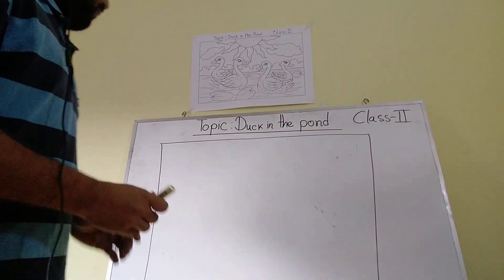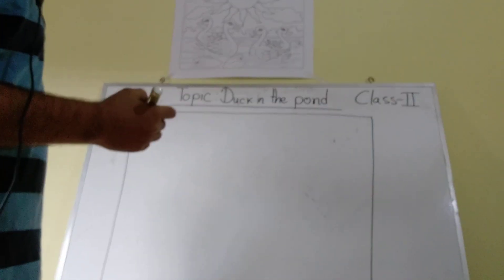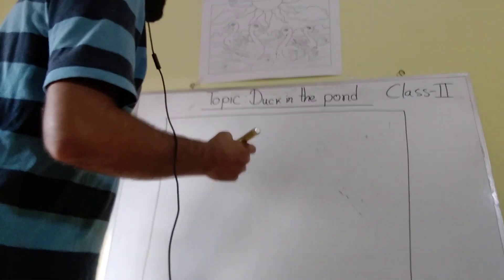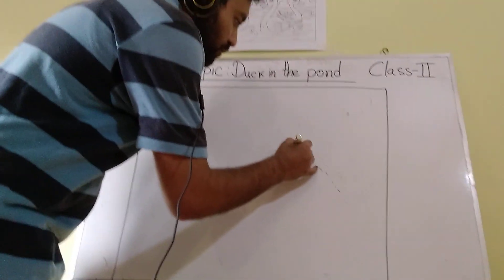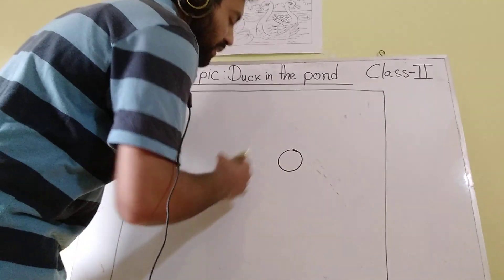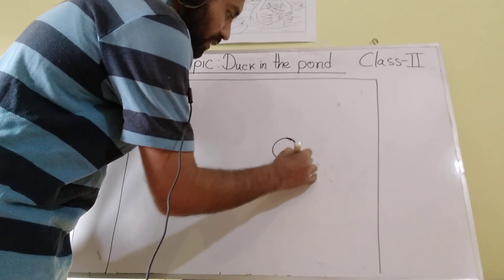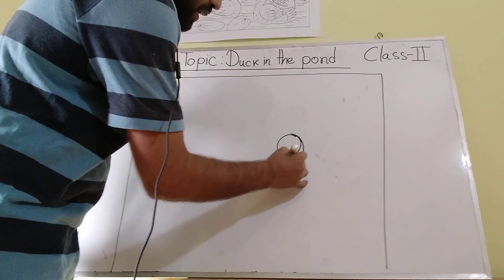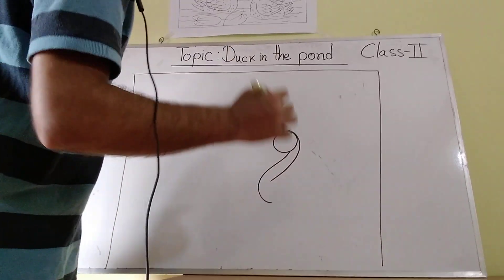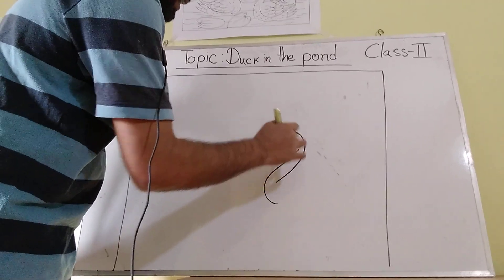Now at first we draw a duck because duck is the main element in this topic. So at first we make a circle. After that we make it like a nine. Now we make an S. From its lower face we rub in its overlapping lines.